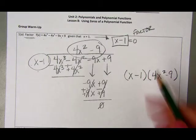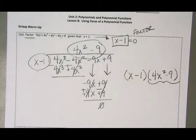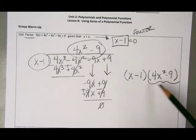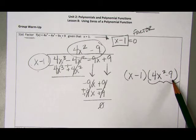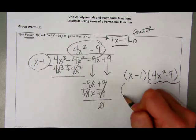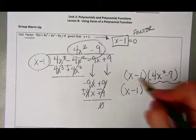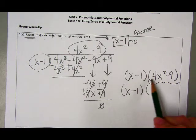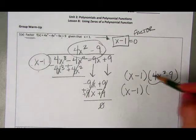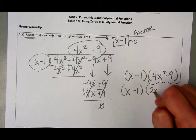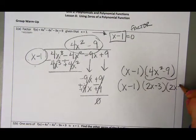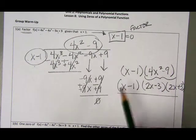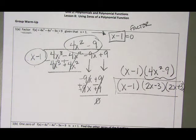I still need to factor this down a little bit more because I can. I have differences of perfect squares here. My 4 is a perfect square, x squared is a perfect square, and 9 is a perfect square. x minus 1 stays. When I factor this quadratic, I get 2x minus 3 and 2x plus 3. So I have three factors for my answer for number 1A.